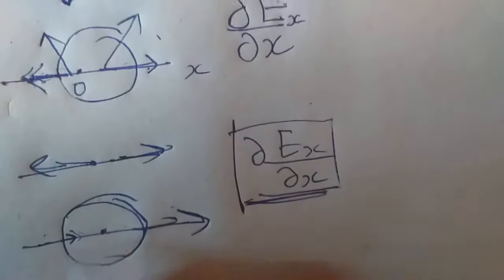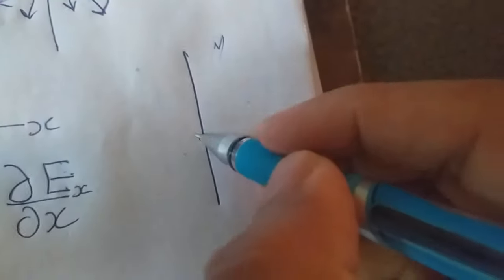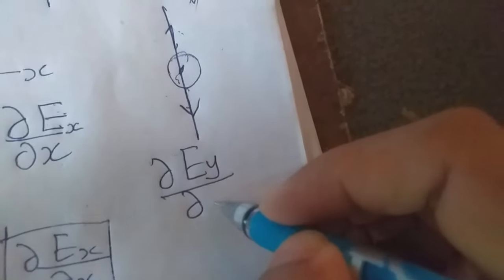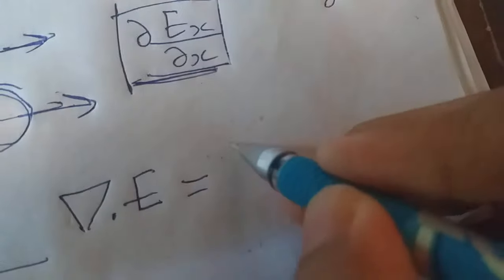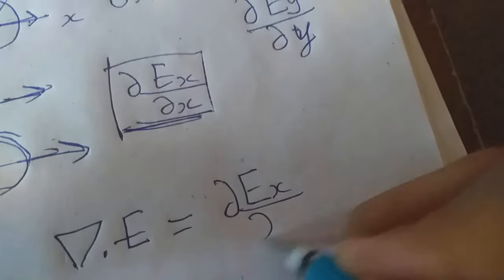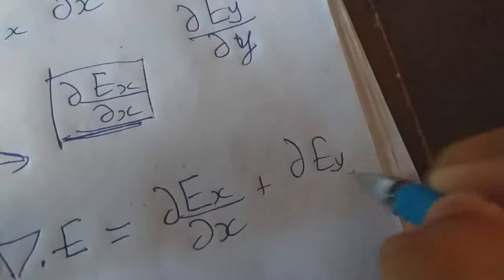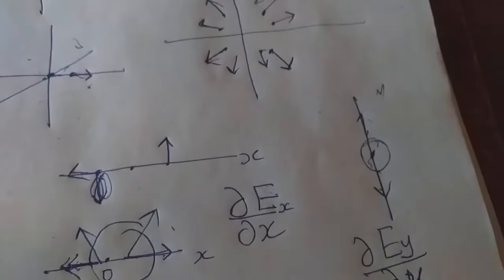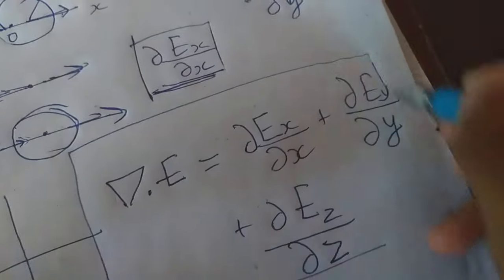That is the x-axis. Now the y-axis is 0 — that is negative and positive — then the divergence is positive. This is the partial derivative of E_y with respect to the y-axis — that is positive. We can define the divergence as: partial derivative of E_x with respect to x, plus partial derivative of E_y with respect to y, plus the 3-dimensional partial derivative of E_z with respect to z. That is the divergence formula. Thank you.